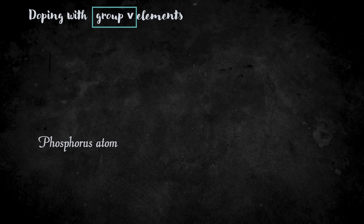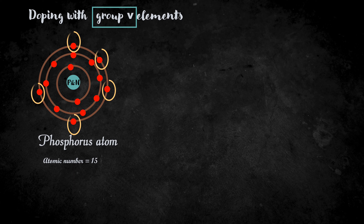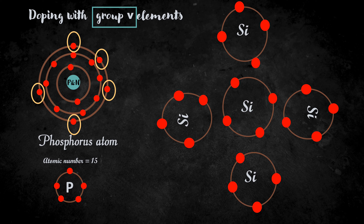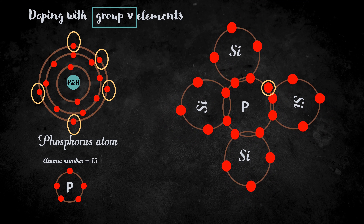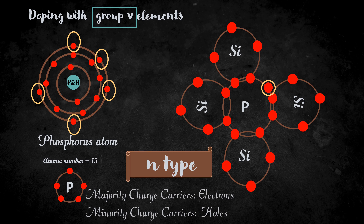Now let's see what happens when a silicon atom is doped with a group 5 element. Group 5 refers to elements whose valence shell has 5 electrons. Let's take an example: phosphorus. The atomic number is 15, therefore the number of electrons will also be 15. To make it simple, we will consider only the valence electrons. When we replace one silicon atom with phosphorus, an extra electron is introduced in the valence shell. Now conduction takes place due to the free electron movement. This type of impure semiconductor where conduction is through free electrons is called N-type semiconductor. Majority carriers in this type are electrons and minority carriers are holes. These minority carriers are generated in the same way as discussed earlier.